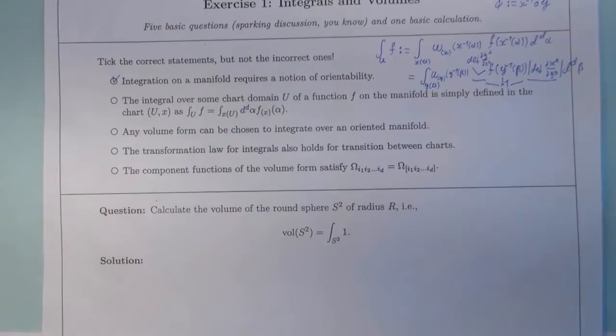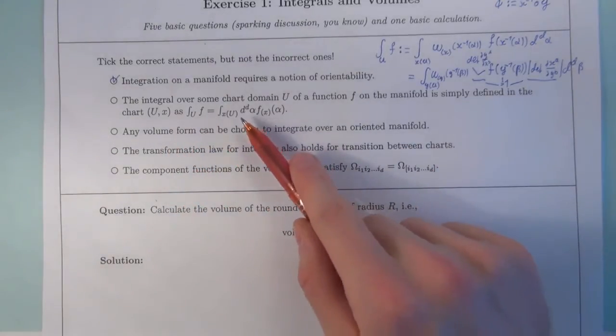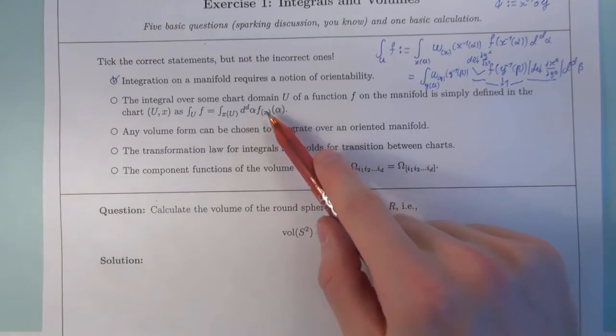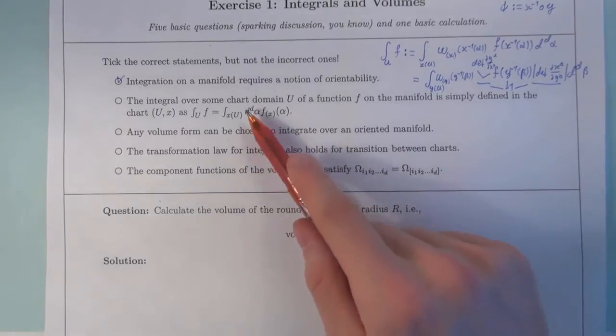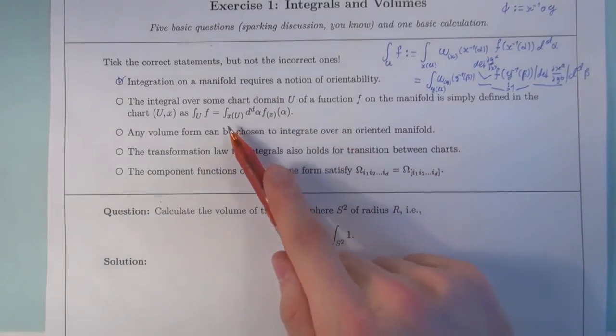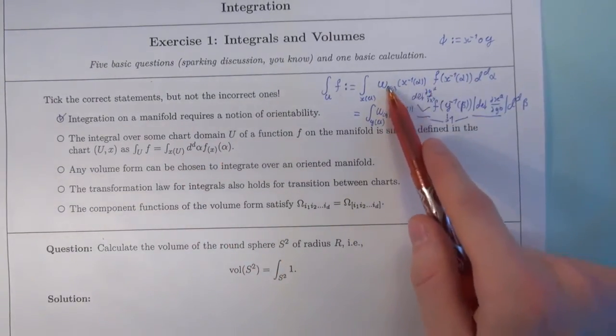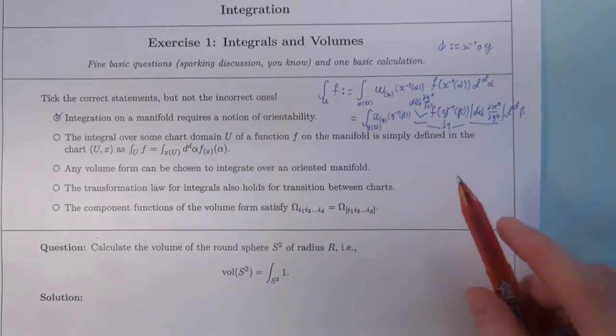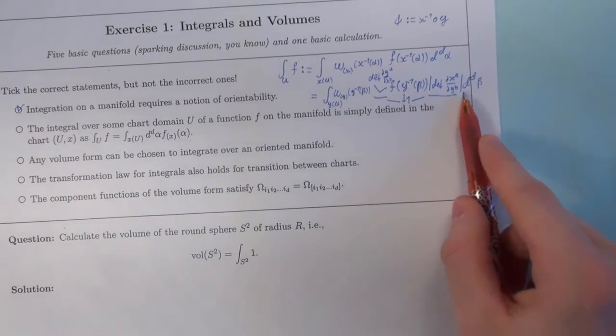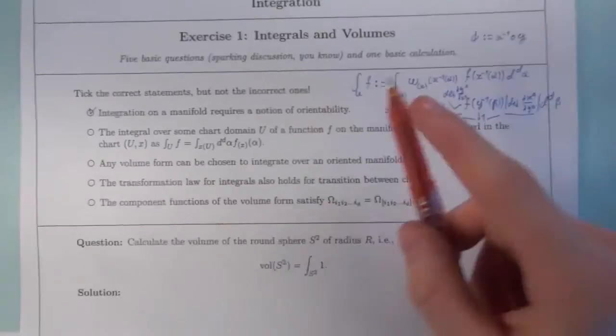Second, the integral over some chart domain u of a function f on the manifold is simply defined in the chart u, x as the integral over the chart, the integral over the function in the chart integrated over these alphas. And you can readily see that this is not quite true because we defined it with making use of these objects omega and you can see why we had to do this because if you change between two charts, you pick up this factor and this factor needs to be cancelled with this factor, you get exactly from this omega. So, it is not true.